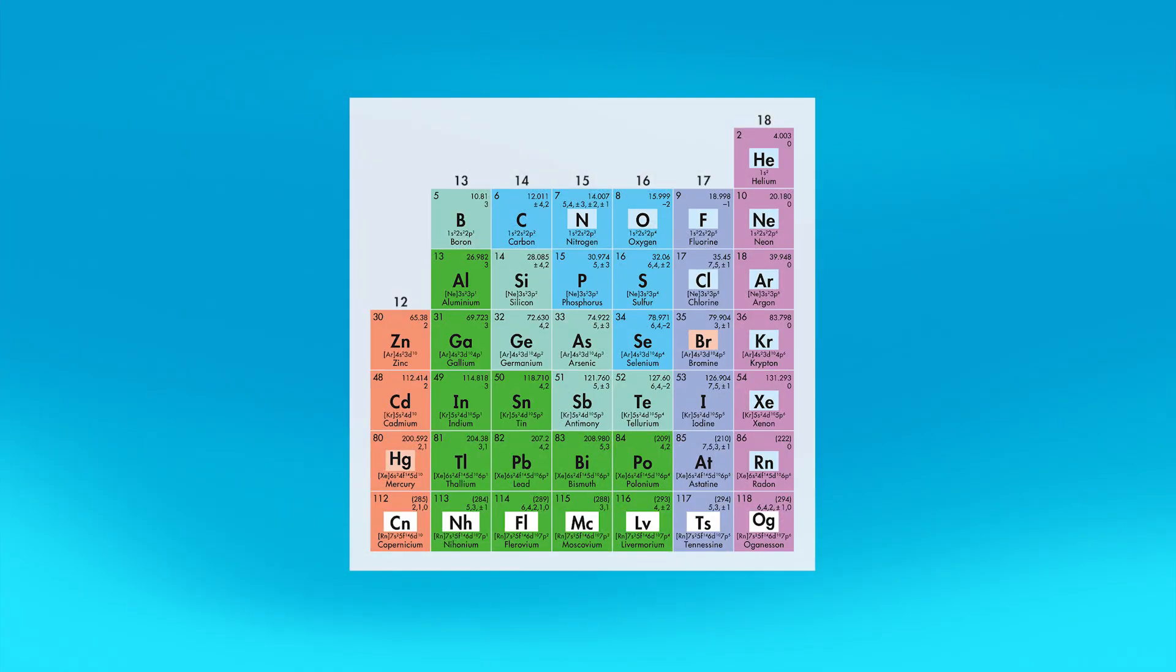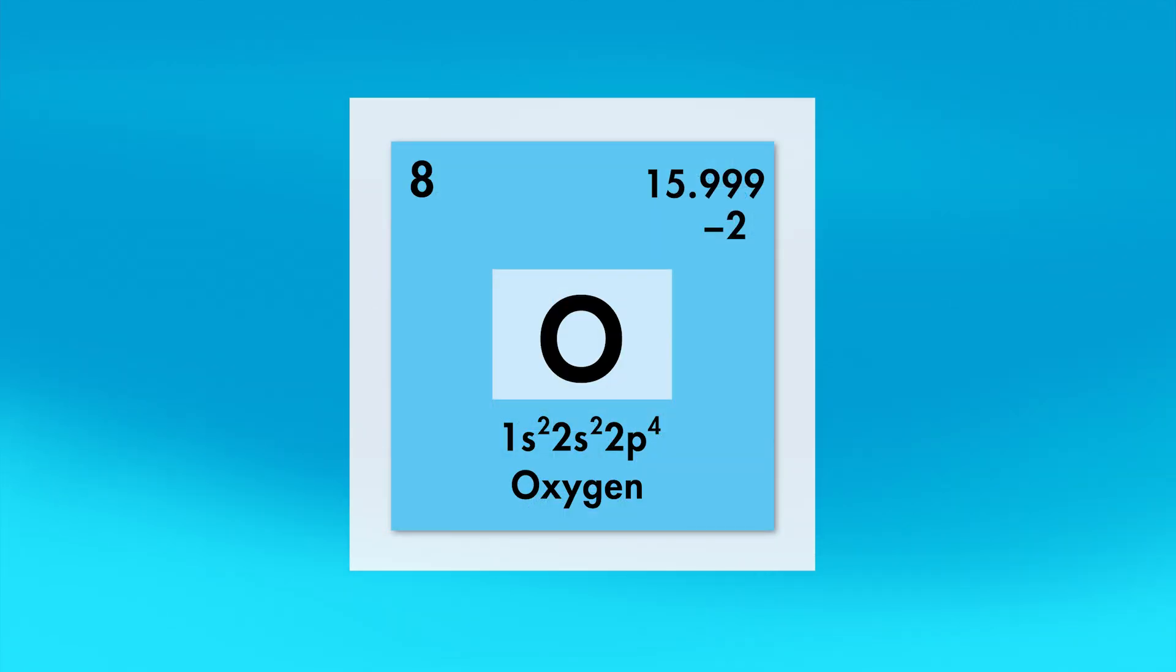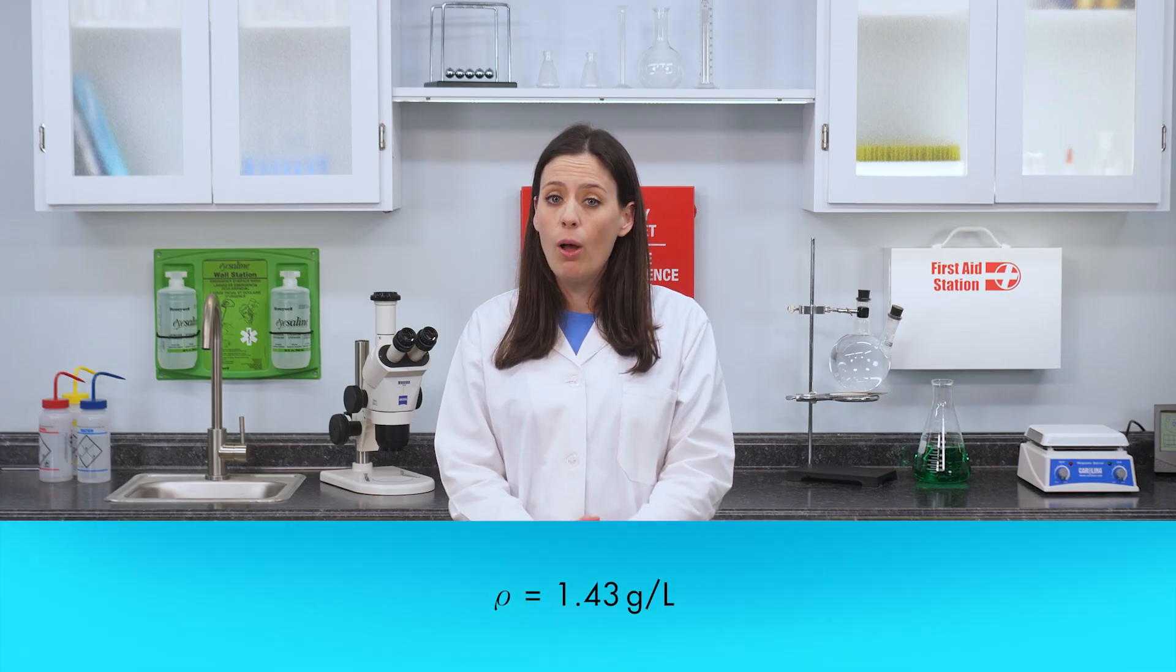The next non-metal we will examine is oxygen. Oxygen is in group 16 on the right side of the periodic table. Oxygen is placed in group 16 because an atom of oxygen, like the other members of this group, has 6 valence electrons. The atomic number of oxygen is 8, which means an atom of oxygen has 8 protons and 8 electrons. Oxygen is denser than hydrogen, but its density is still quite low, only 1.43 grams per liter.